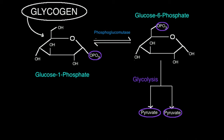The point is, glycogen removes units of glucose as glucose 1-phosphate. They're useless to glycolysis as-is, and so they have to be isomerized to glucose 6-phosphate so that they can be used directly by glycolysis. That isomerization is done by phosphoglucomutase.